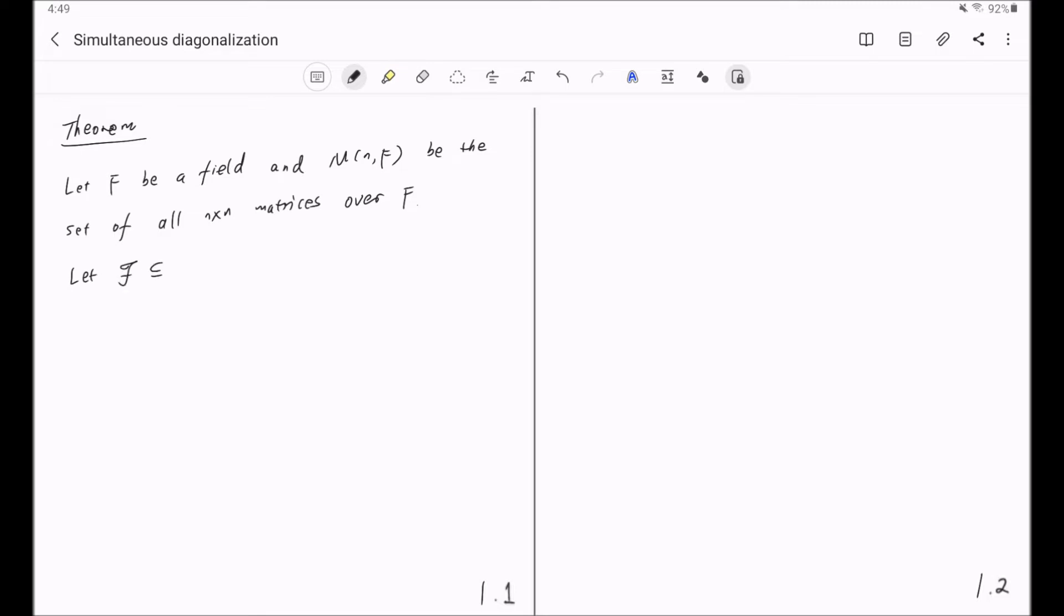Let's call script F a subset of MNF consisting of diagonalizable matrices. By this we mean, for any matrix A in MNF, there exists an invertible matrix S. This notation means the set of invertible n by n matrices over F, that possibly depends on A, such that S of A inverse times A times S of A is a diagonal matrix.